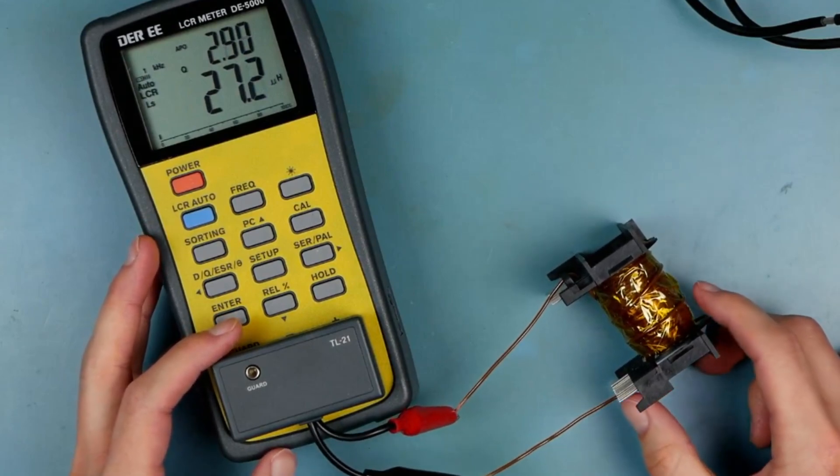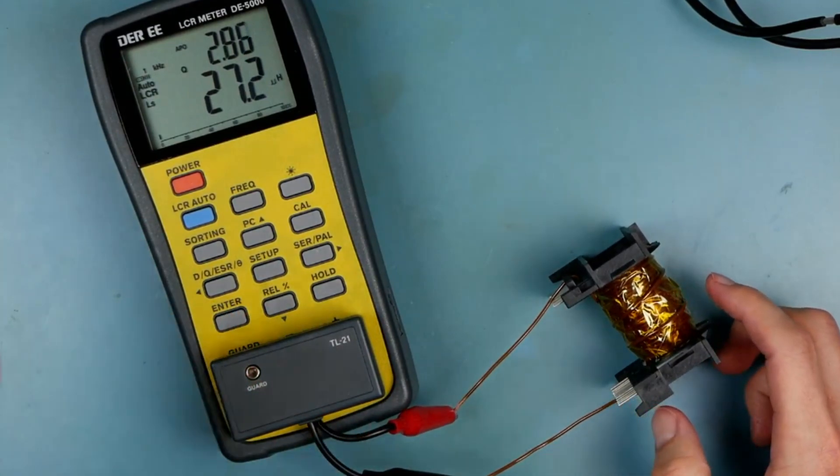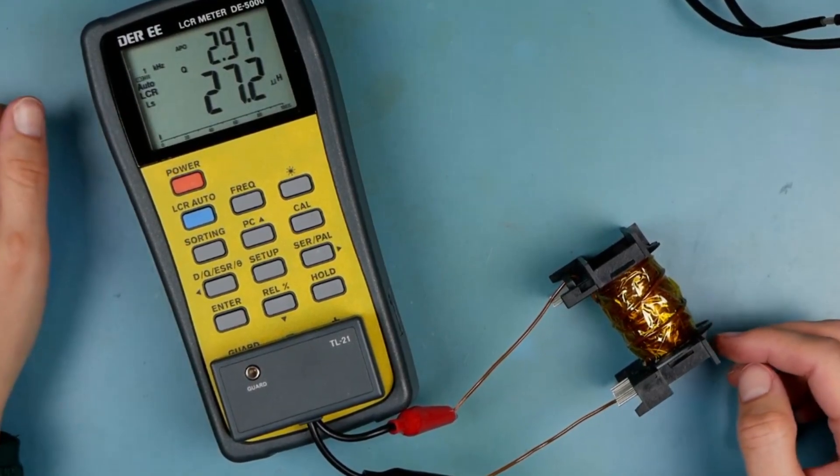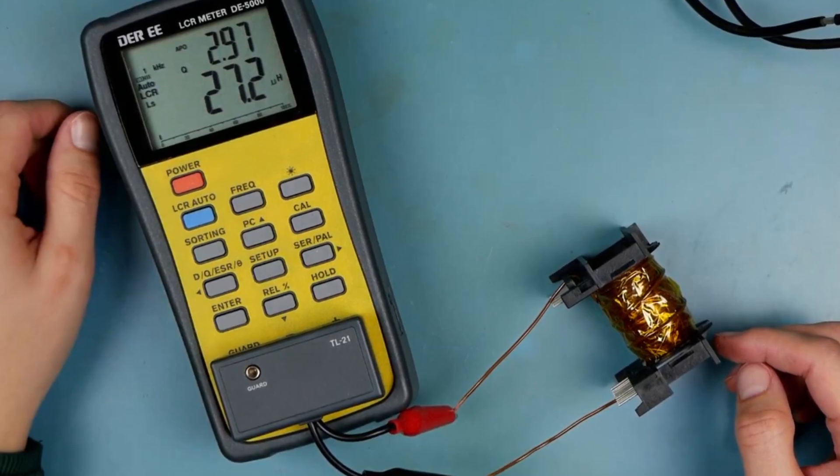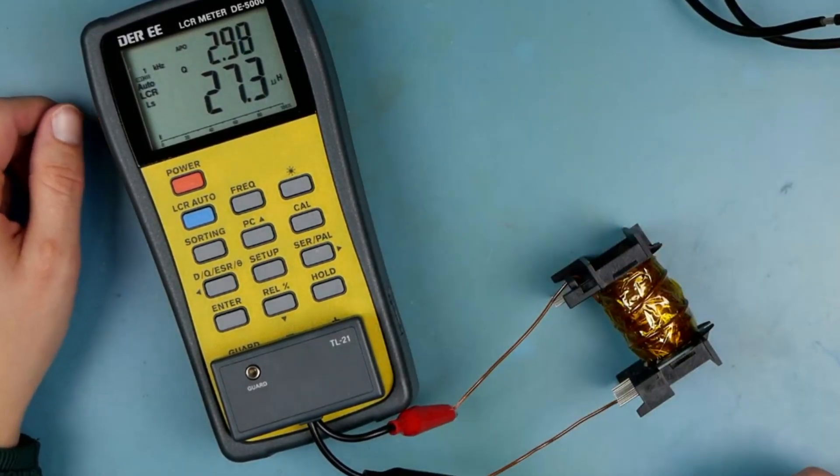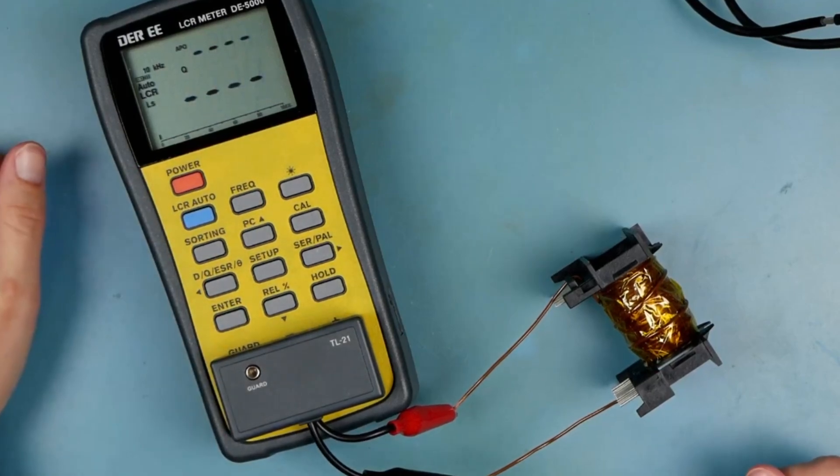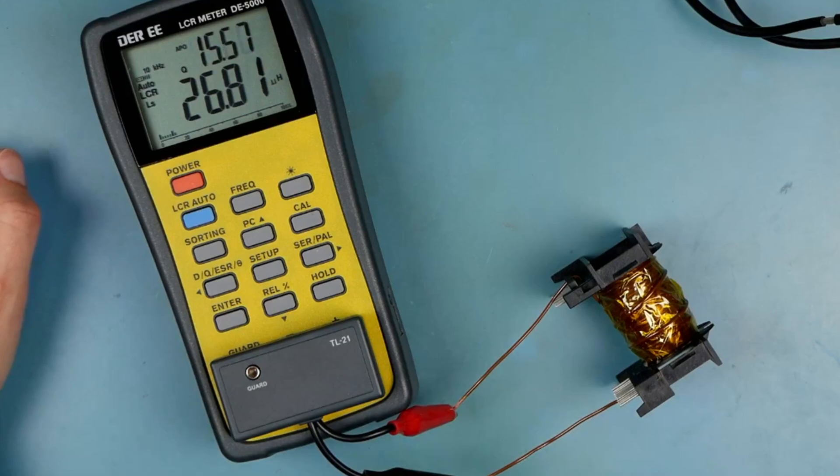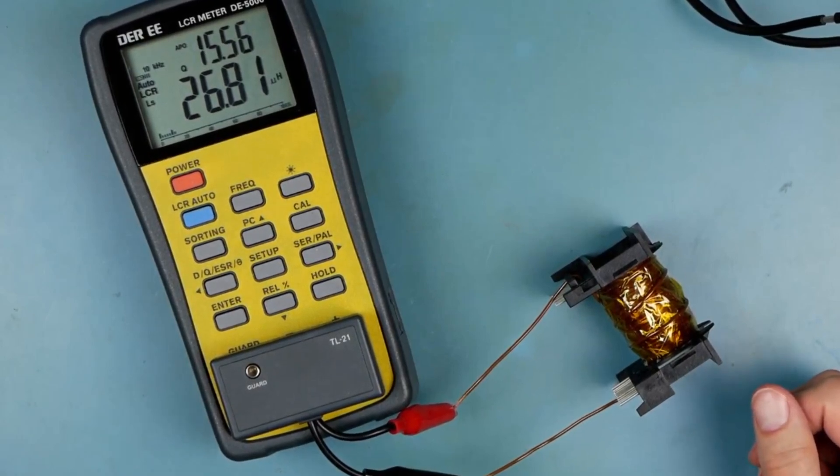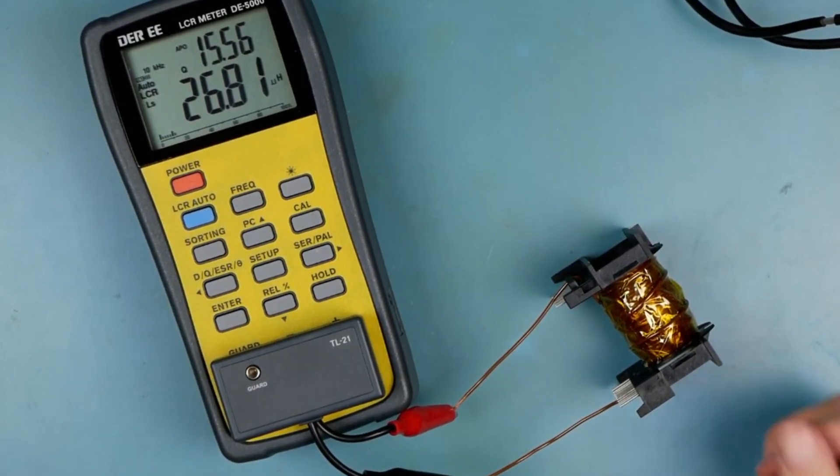And what are we getting? Huh. Only 27 microhenries. Quality factors, not great either. About the same as what we had. And, bump it up to 10 kilohertz. Yeah. Not great with this here inductor that we've just wound. It's really not great at all.